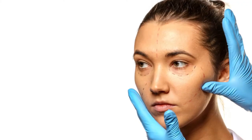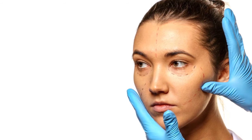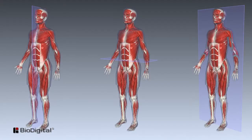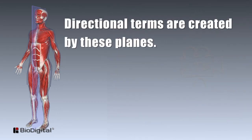In the case of plastic surgery, the body sections will often be mapped out on the patient's body itself. Body planes are imaginary lines drawn through the body at various points to separate the body into sections. Directional terms are created by these planes.